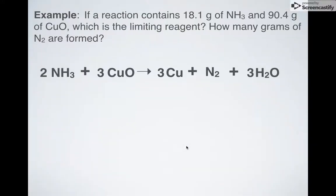So here's an example. Let's say I have 18.1 grams of NH3 and I have 90.4 grams of CuO. So I have ammonia here and then I have copper 2 oxide. I want to know which one of these I'm going to run out of and then how much N2 gas am I going to be making. So how do we do that? Well we convert these two guys from grams to moles first.